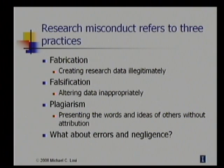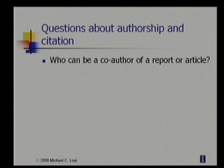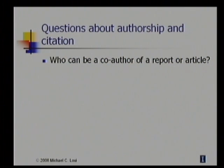Research results in publications, and there are many ethical issues in publication practices. First, who gets to be an author? In engineering research, usually there are multiple authors, and in every discipline we must decide who gets to be an author when there are many people who participate in a research project. The standard test is that an author must be somebody who has made a significant intellectual contribution.